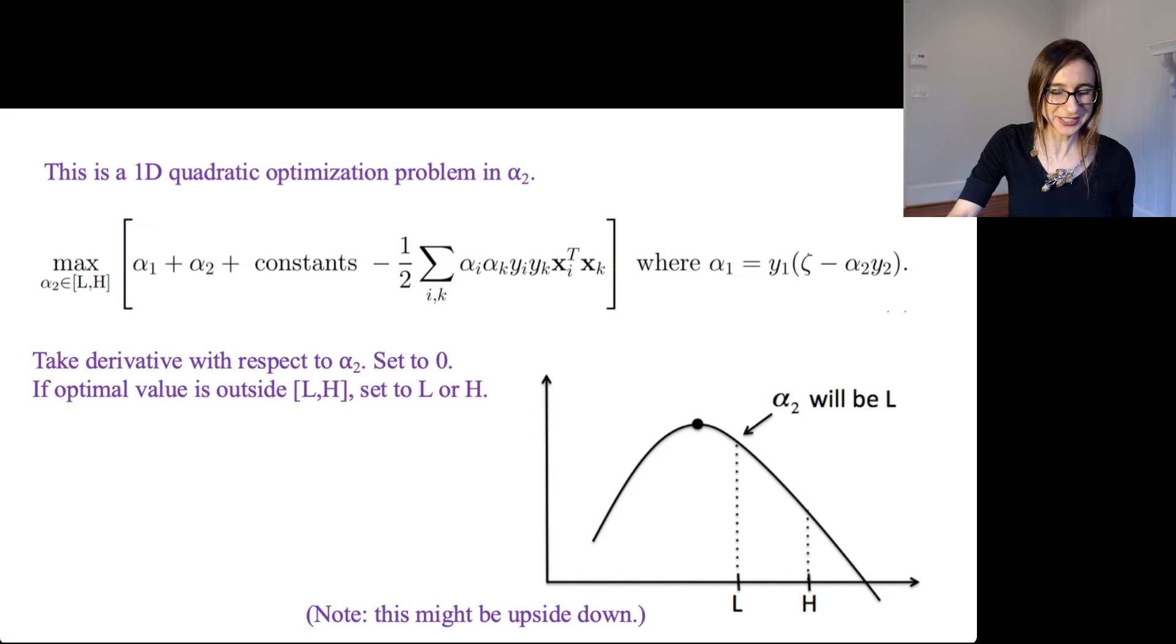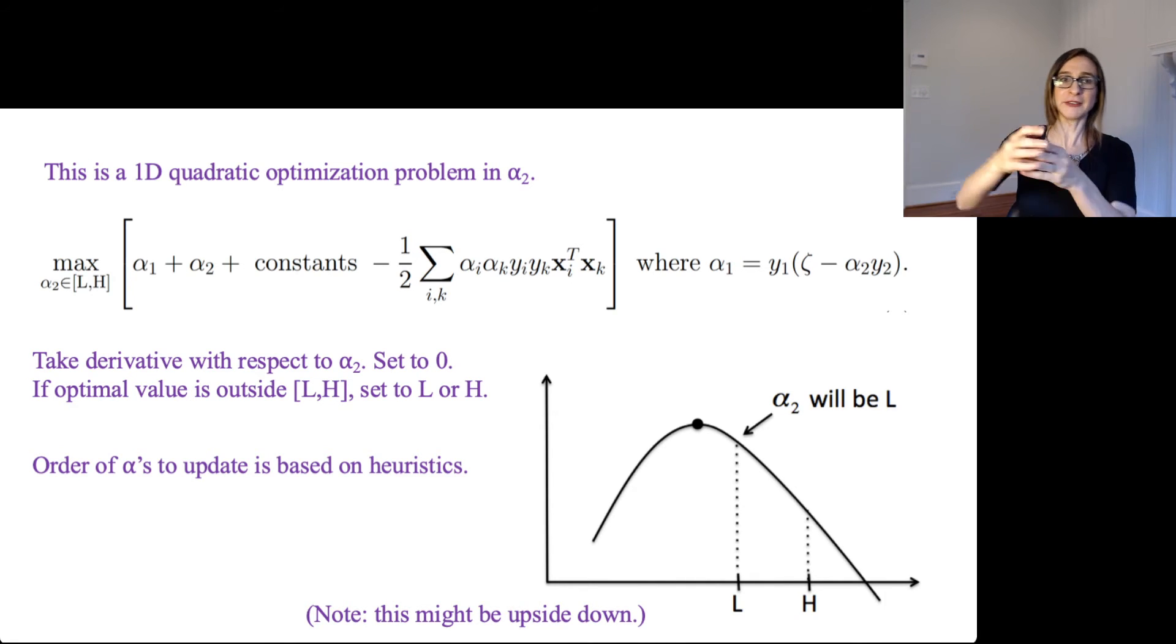You just go and investigate those three and great, you're done. And then, of course, you just continue to iterate over the alphas. Here we solve for alpha 2, but then you might pick like alpha 5 and alpha 6 and then do the same thing. And then you might pick alpha 12 and alpha 1 and then do the same thing. And the order of which alphas to update, that's actually based on heuristics. Often people just cycle through the pairs of alphas: alpha 1 and alpha 2, alpha 2 and alpha 3, alpha 3 and alpha 4. Whatever you want to do, you can do whatever you like. As long as you continue to update the alphas, you'll eventually get to the optimal solution.